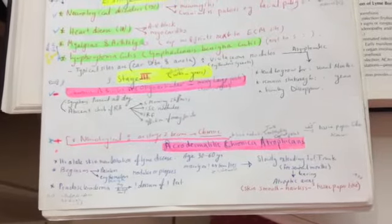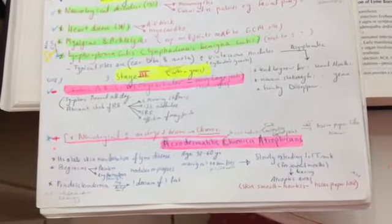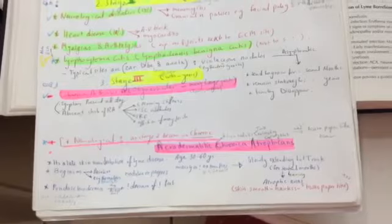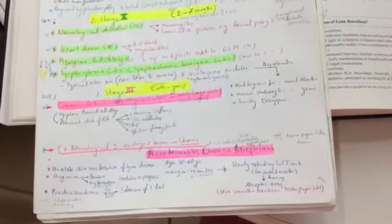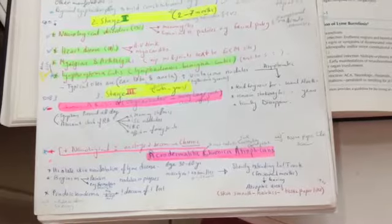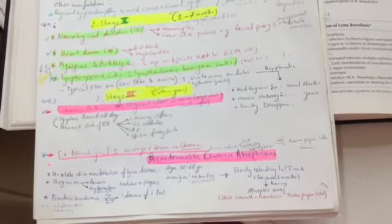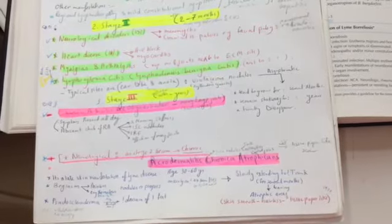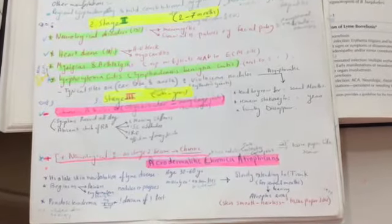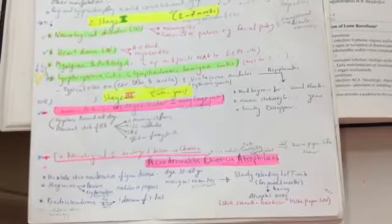Second, the neurological symptoms as stage 2 but become chronic. The acrodermatitis chronica atrophicans. This is elite skin manifestations of Lyme disease, age 30 to 60 years, begins as painless erythematous or bluish nodules and plaques, mainly on the extensors that slowly extend to the trunk for several months, leading to atrophic scars.